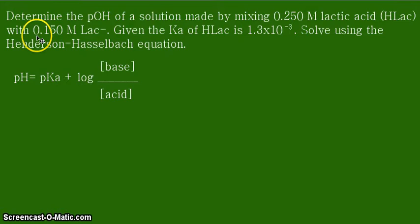The problem is asking to determine the pOH of a solution made by mixing 0.250 molar lactic acid, represented by HLac, with 0.50 molar Lac-, which is the conjugate of this acid. Given the Ka of HLac as 1.3 times 10 to negative 3, we are asked to solve the pOH using this equation. We simply have to substitute the values here because everything we need is given in the problem.